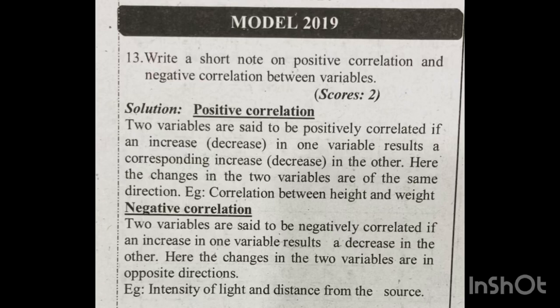If we talk about positive correlation, what is the value of positive correlation? Two variables are said to be positively correlated if an increase or decrease in one variable results in a corresponding increase or decrease in the other.